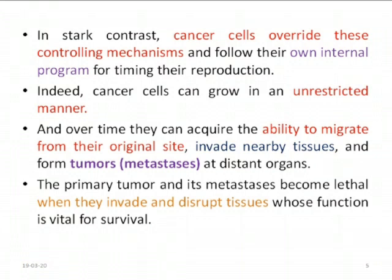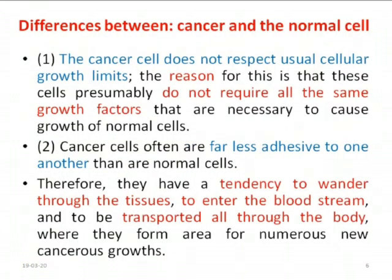Cancer cells move from their place, invade nearby tissues, and form tumors at distant organs. This process is called metastasis. Wherever they reach, they start producing tumors in those places. Metastasis is one of the most serious conditions associated with cancer — once they move from one place to another, they start growing there.